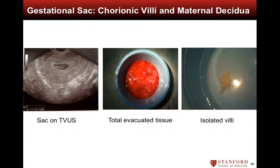The gestational sac shown on the leftmost image is commonly measured using ultrasound prior to performing an MVA. After evacuation of all the miscarriage tissue shown in the center image, the villi comprise a fraction of the total amount of evacuated tissue, so correctly identifying the chorionic villi from maternal decidua is crucial for successful chromosome analysis of the miscarriage tissue.